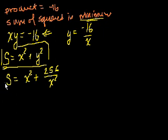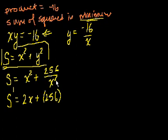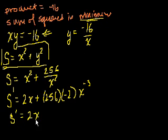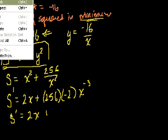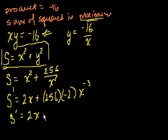I'll just write s prime. We could have written ds dx, but I'll save on notation. Save on my electronic ink. So s prime is equal to, so this is the slope of this function at any time, at any x. 2x plus, this is the same thing as 256 times x to the negative 2, right? So what will be the derivative? The derivative is going to be 256. We multiply it by times the exponent, which is minus 2. And then we decrement the exponent by 1, so we get x to the minus 3. So the derivative is equal to 2x minus 512 times x to the minus 3.